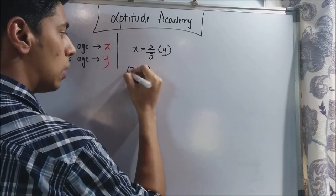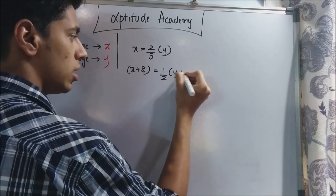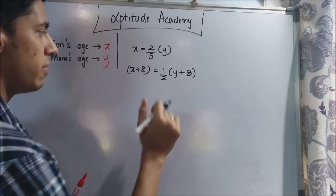And they said 8 years later, x plus 8 will be 1 half, 1 by 2 of the mom's age. You can't take y because the mom will also age after 8 years. So y plus 8.